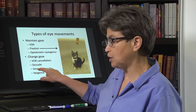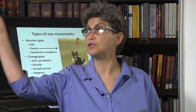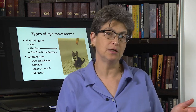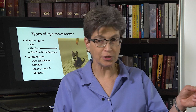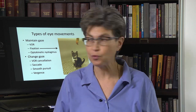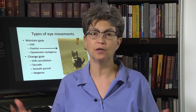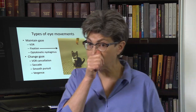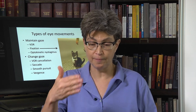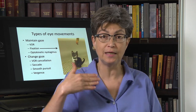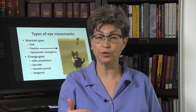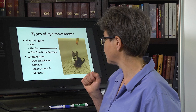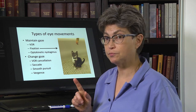Another type of eye movement that changes gaze is smooth pursuit. This allows us to follow a bird as it travels across our visual field, or follow anything — if we're watching a sports contest and watching people run up and down a field, we're using smooth pursuit. We'll touch on that very briefly. Finally, there's vergence, which allows us to change where we're looking in depth, so we can look from a far target to a near target. We won't talk more about that — we already covered it when we discussed cranial nerves and the vision section.